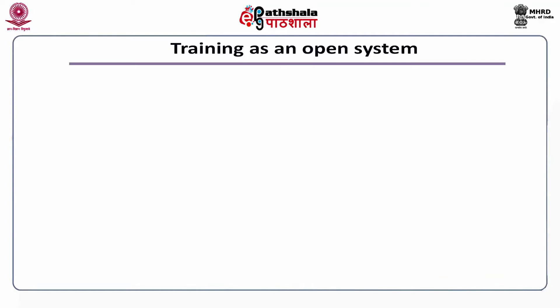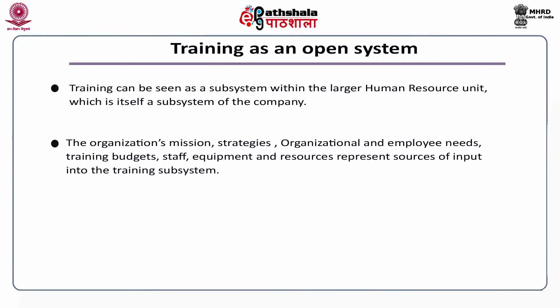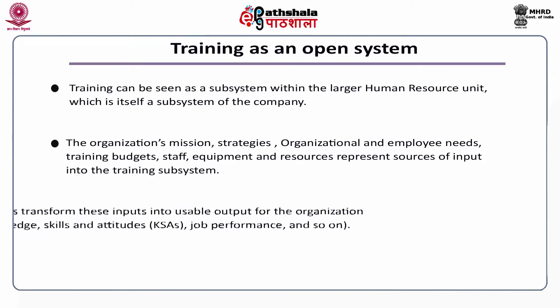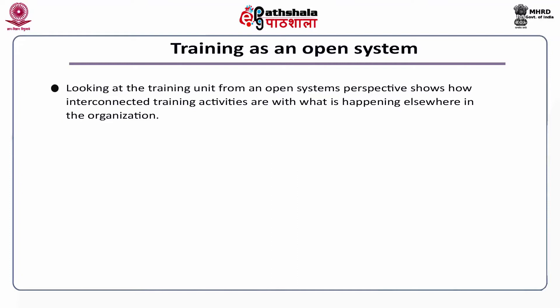Training is an open system. Training can be seen as a subsystem within the larger human resource unit, which itself is a subsystem of the company. The organization's mission, strategies, organizational and employee needs, training budgets, staff, equipment and resources represent sources of input into the training subsystem. Training processes transform these inputs into usable output for the organization, which is improved knowledge, skill and attitude — that is KSA — and job performance. This shows how interconnected training activities are with what is happening elsewhere in the organization.